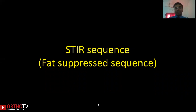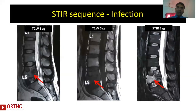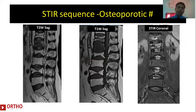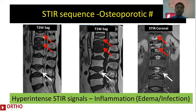Sometimes we utilize STIR sequences, which are fat-suppressed sequences. The STIR is similar to the T2-weighted image except the fat component is suppressed. This makes it an excellent sequence for visualization of fluid, especially in cases of infection or cystic collection around the spinal cord. It is also important for differentiating new and old osteoporotic fractures. You can see a patient with multiple osteoporotic fractures: the vertebral bodies marked with a red arrow show a hyperintense signal indicating recent fractures, whereas the vertebral body marked in white is hypointense, indicating an old fracture.